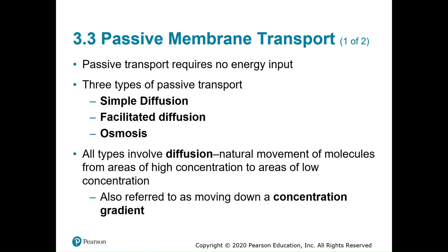Passive transport requires no energy — that is a key takeaway. There are three different types: simple diffusion, facilitated diffusion (meaning it's helped by something), and osmosis. All types involve diffusion, which is the movement of molecules from high concentration areas to low concentration areas — moving down the concentration gradient. Think of it like a crowded classroom: you naturally move toward where there are fewer people.